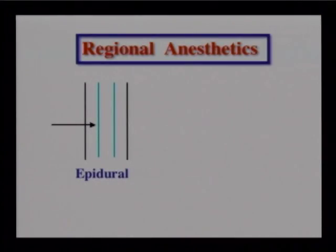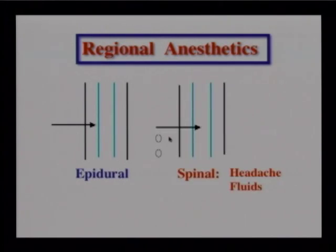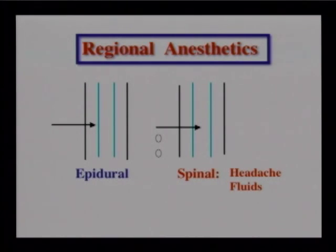Regional anesthetics: know the difference between epidural and spinal. An epidural does not puncture the dura — no loss of cerebrospinal fluid, no risk of spinal headache. A spinal anesthetic punctures the dura, causes loss of cerebrospinal fluid, and puts the patient at risk for spinal headache. For spinal anesthesia, keep the patient flat to reduce the likelihood of spinal headache and encourage fluids to help replace the cerebrospinal fluid.